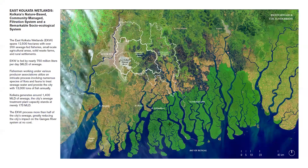The East Kolkata Wetlands exist at multiple scales of basin—part of the Ganga Basin, but also functioning as a filter between the Kolkata metropolitan region and the Sundarbans, one of the most important mangrove ecosystems in the world. Because Kolkata moves most of its sewage eastward, if it weren't for the East Kolkata Wetlands, the city would have a much more outsized impact on the health of the Sundarbans—one of the most important barriers against sea level rise. The wetlands process more than 750 million liters of sewage per day, which is almost more than half the total sewage the Kolkata metropolitan region generates, far exceeding the city's own treatment capacity of only about 200 MLDs.